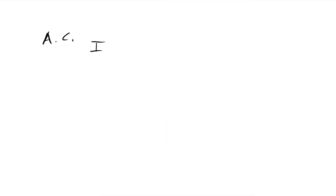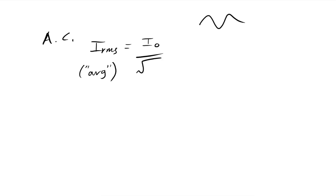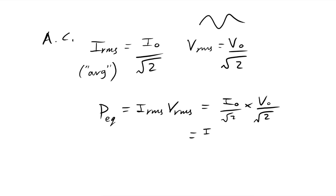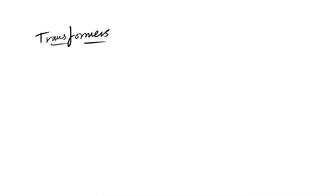For alternating current, I_RMS = I₀/√2 and V_RMS = V₀/√2. Average power = I_RMS × V_RMS = (I₀/√2)(V₀/√2) = I₀V₀/2, which equals the peak power divided by two.